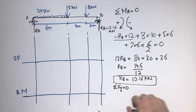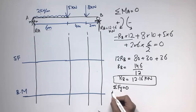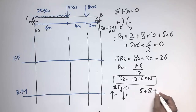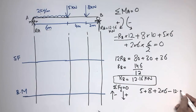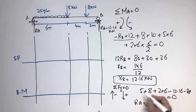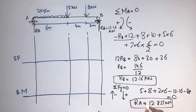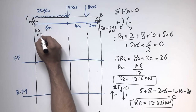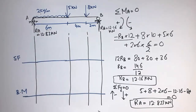To find Ra, we use the summation of forces in the vertical direction equal to zero for equilibrium. The downward forces are 5 kN, 8 kN, and the distributed load resultant 2 × 6 = 12 kN. The upward forces are Rb and Ra. Solving, Ra comes out to be 12.83 kN. This is how we find the support reactions.